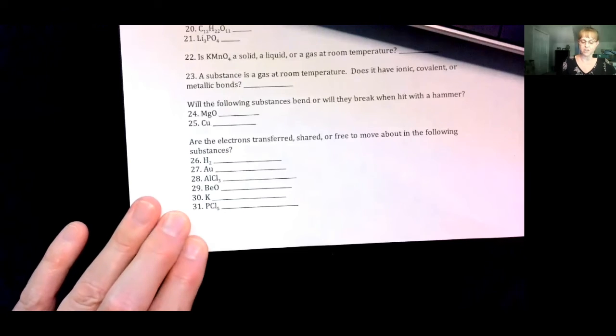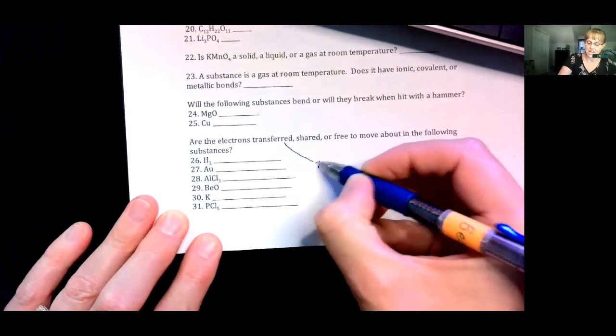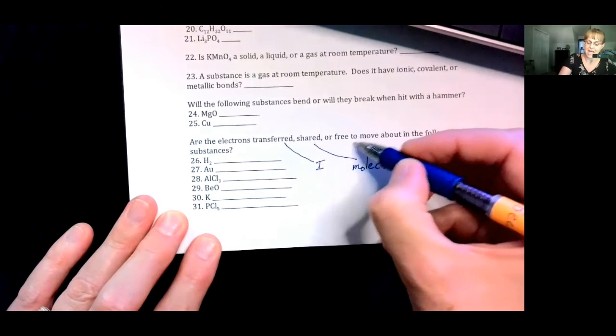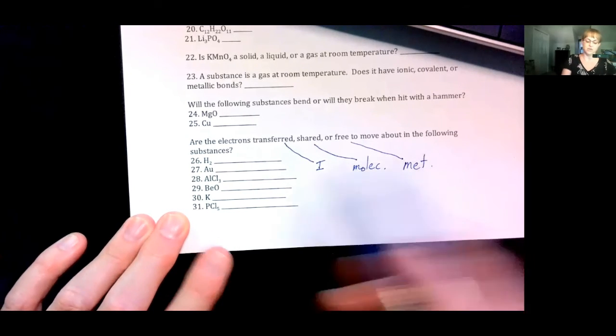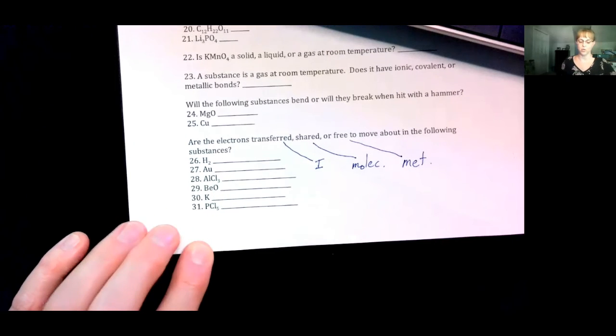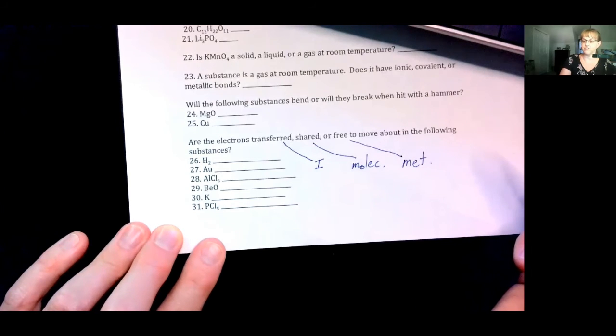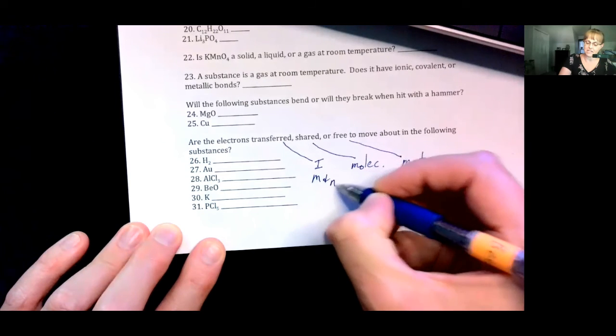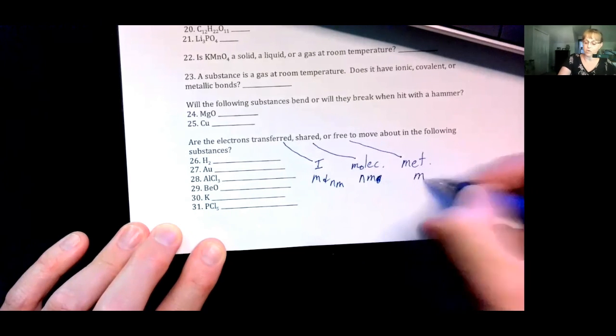Number twenty-six, are the electrons transferred, shared, or free to move about in the following substances? If the electrons are transferred, it's ionic. If they are shared, it's molecular with covalent bonds. And if they're free to move about, it's a metal, or metallic substance. So now, you can figure out whether each of these transfers, shares, or their electrons are free. By the way, ionic compounds are made of metals and non-metals, molecules, non-metals only. And metals, of course, are made of metals.